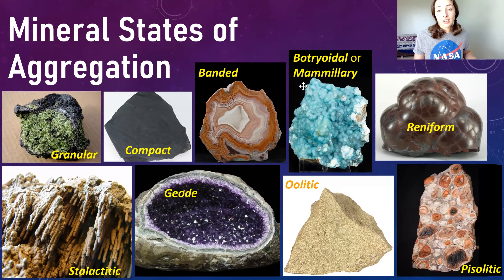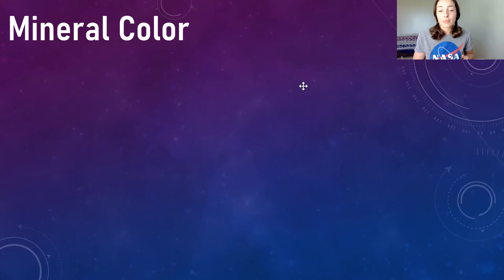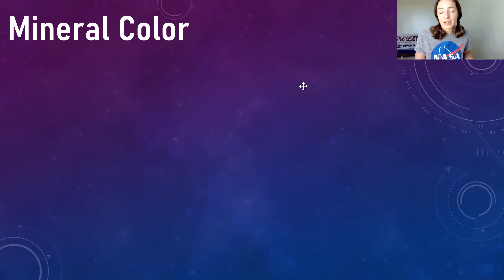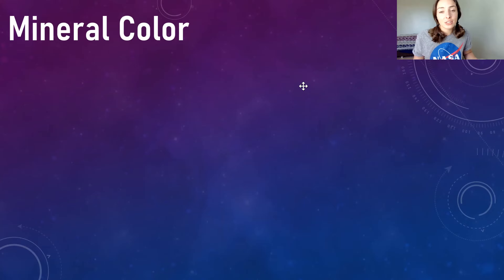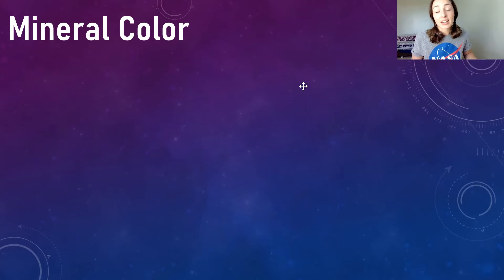Next we have mineral color. Mineral color isn't the best way to identify minerals in hand specimen because there are varieties of minerals that are differently colored. For example, quartz varieties include amethyst (purple), rose quartz (pink), translucent quartz, milky quartz (whitish), and smoky quartz. Like quartz, many other minerals have different varieties with different colors.